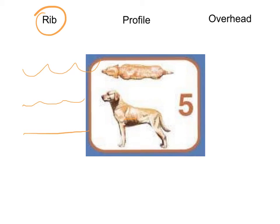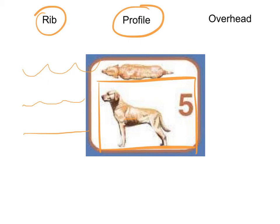The next check is the profile check. To perform the profile check, we need to be looking at our dog from this angle. What we're looking for is that the abdomen is tucked in just behind the rib cage. In an underweight dog, the abdomen tucks in even further. And in an overweight dog, the abdomen won't tuck in, or may even bulge out.